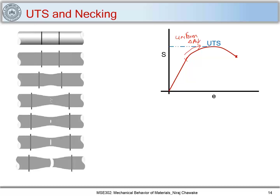The cross-section area decreases uniformly throughout the gauge marks till UTS. But as soon as UTS is reached, there is a geometric constriction which happens locally — locally there is a decrease in cross-section area. I call this as initial necking.